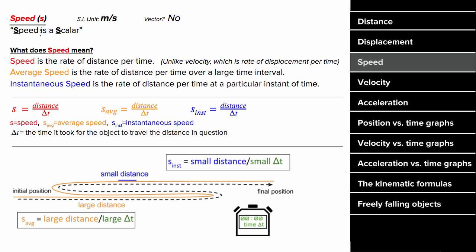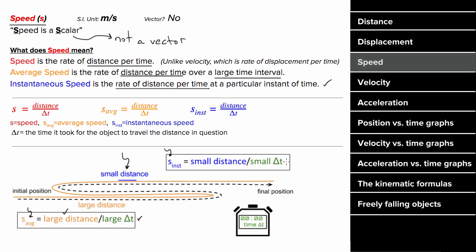What does speed mean? Speed is a way to measure how fast something's moving, and it's a scalar — which for our purposes means not a vector. Speed is defined to be the distance per time. You could define the average speed as the distance per time over a large time interval, or the instantaneous speed as the rate of distance per time at a particular moment in time. The units for speed are meters per second, it is not a vector, and speed can only be positive or zero — it can never be negative.